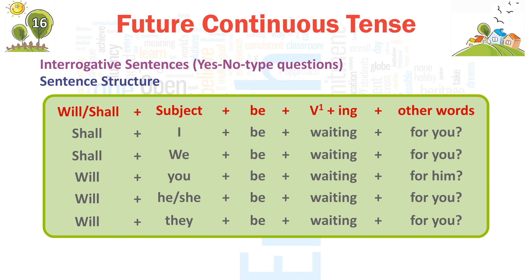Will + you + be + waiting + for you? → 'Will you be waiting for him?' Will + he/she + be + waiting + for you? → 'Will he be waiting for you?' / 'Will she be waiting for you?'